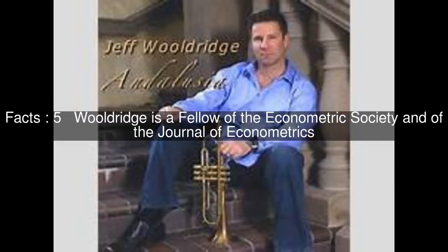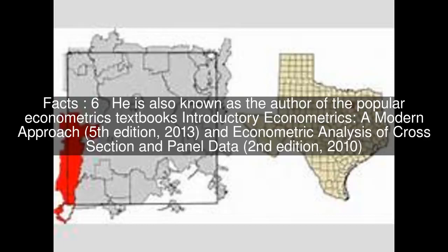Wooldridge is a fellow of the Econometric Society and of the Journal of Econometrics. He is also known as the author of the popular econometrics textbooks: Introductory Econometrics: A Modern Approach, 5th Edition (2013), and An Econometric Analysis of Cross-Section and Panel Data, 2nd Edition (2010).